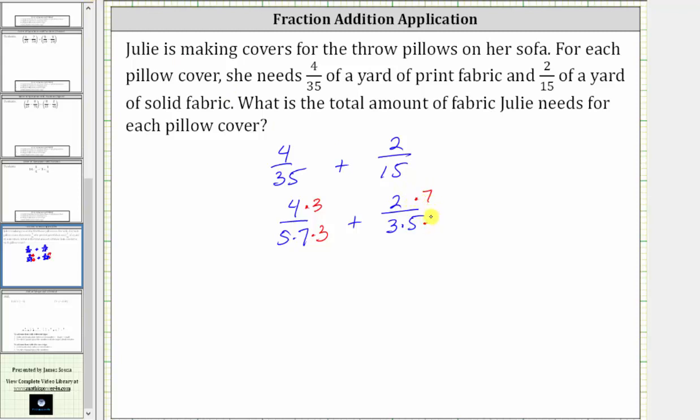Notice by doing this, both the denominators now contain the same prime factors, and we have found the least common denominator, which is 3 times 5 times 7, which is 105.